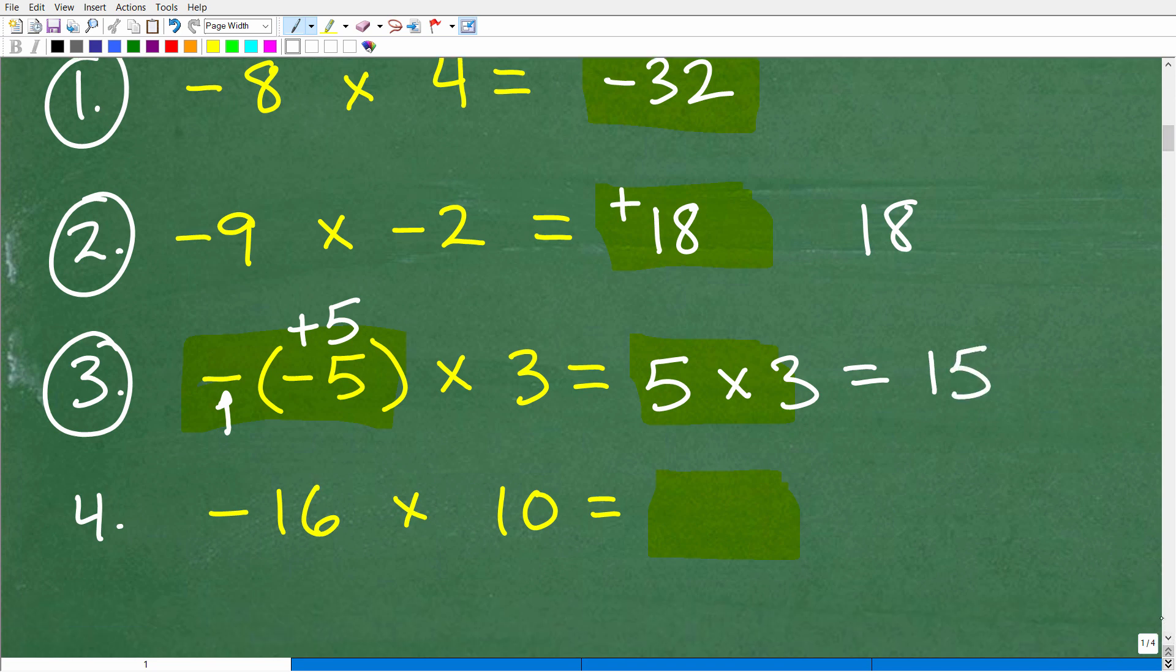Let's finish up with our last problem. I have negative 16 times a positive 10. This is negative, this is positive. Different signs. So my answer is going to be negative. So 16 times 10, that would be 160. So this is negative 160.